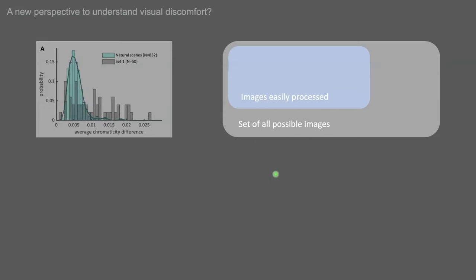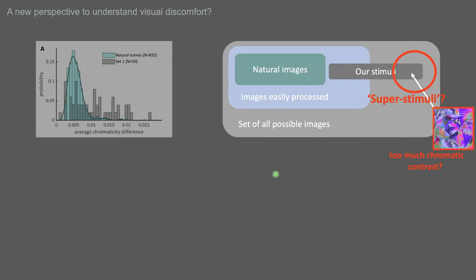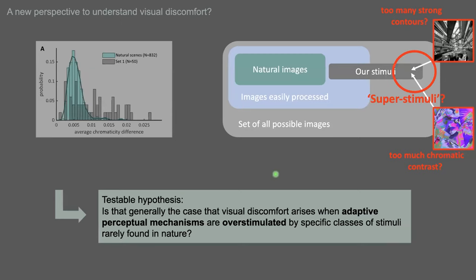So this study may provide a new perspective on how to understand visual discomfort. Let's consider the gigantic space of all possible images. A big subset of them is processed without any problem by the visual system. Natural images make a tiny subset within this set, so this inclusion is in conformity with the theory of efficient coding. Now, our stimuli in this experiment straddle the border between comfortable and uncomfortable stimuli. The uncomfortable color stimuli are somehow exaggerated versions of fruit against foliage. In the same way, the typical examples of uncomfortable and epileptogenic stimulus, stripes, may work as a super contour that overloads a visual system made for detecting contours in natural environments. So this leads to a testable hypothesis. Is that generally the case that visual discomfort arises when adaptive perceptual mechanisms are overstimulated by specific classes of stimuli rarely found in nature?